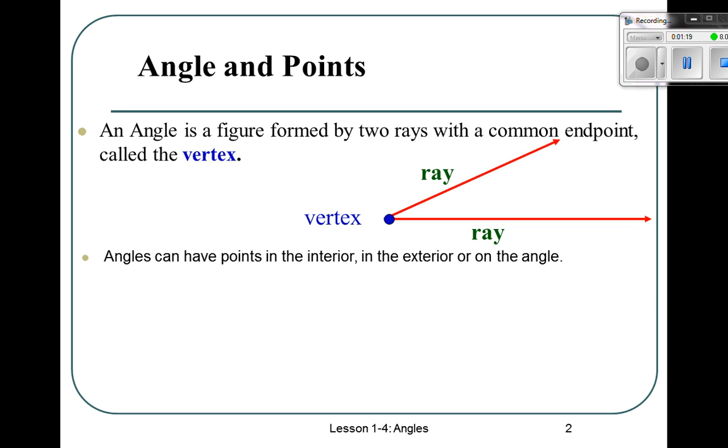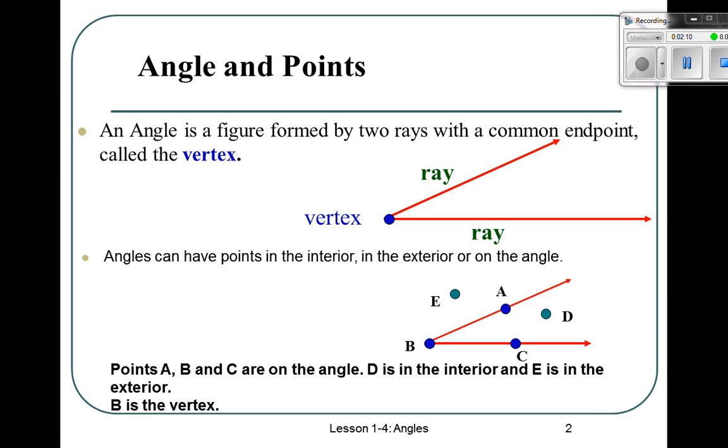There's our angle. A is on the angle. B is the vertex. C is on the angle. And D is in the interior. If the angle closed, it would eat the point inside. Now, exterior, where is an exterior point going to be? It will be the letter E, right there. It could be anywhere outside. Fill in number two appropriately on your paper.